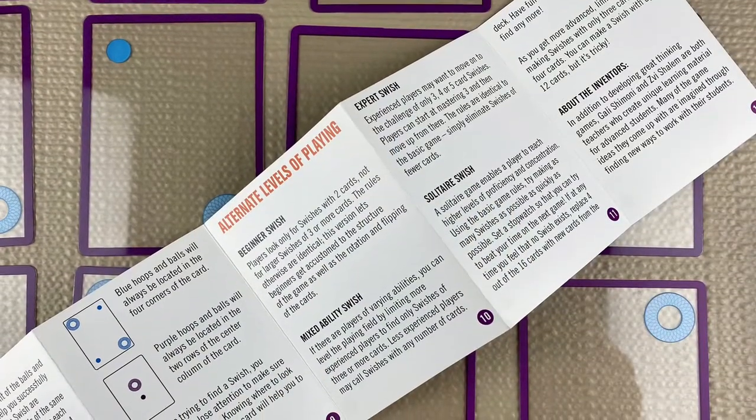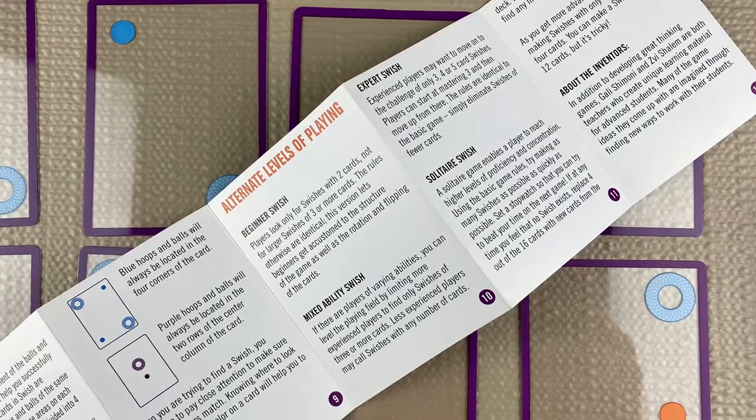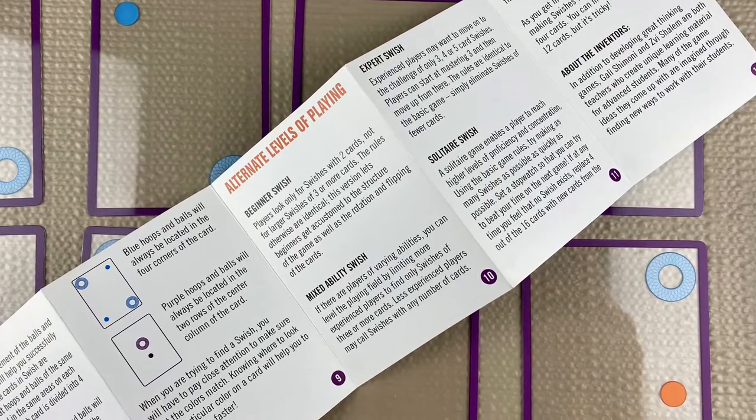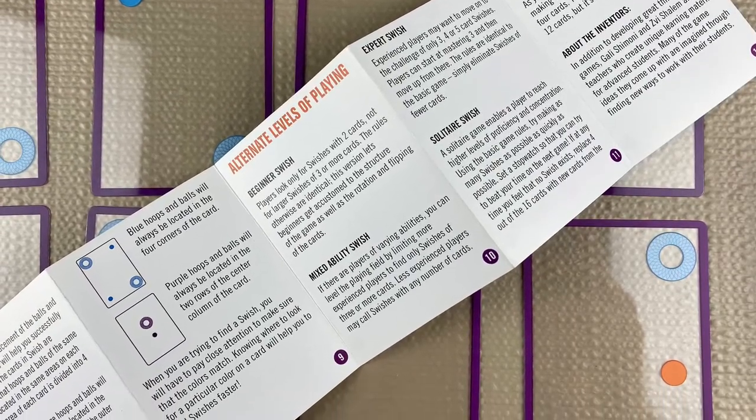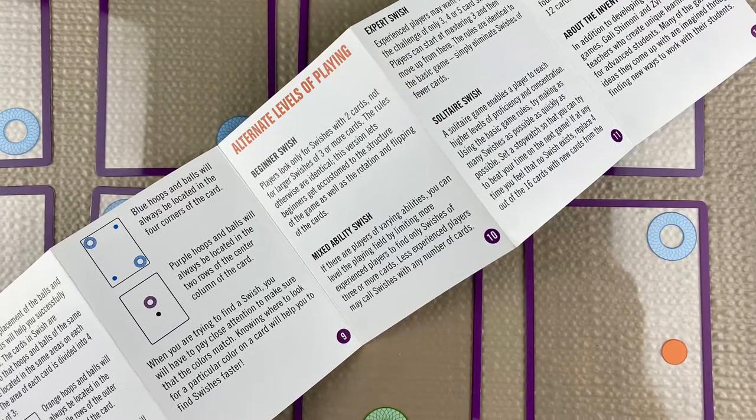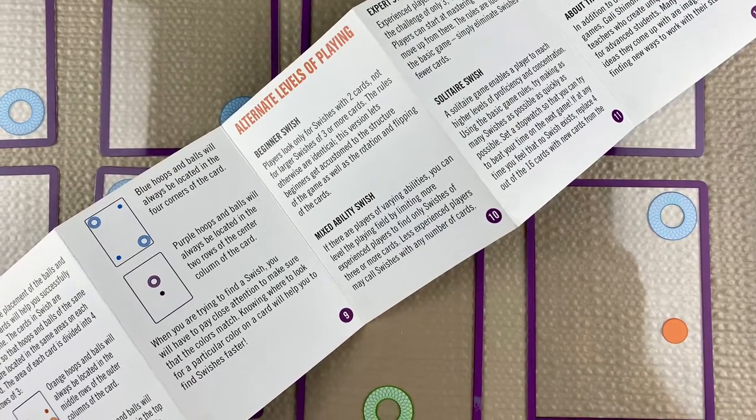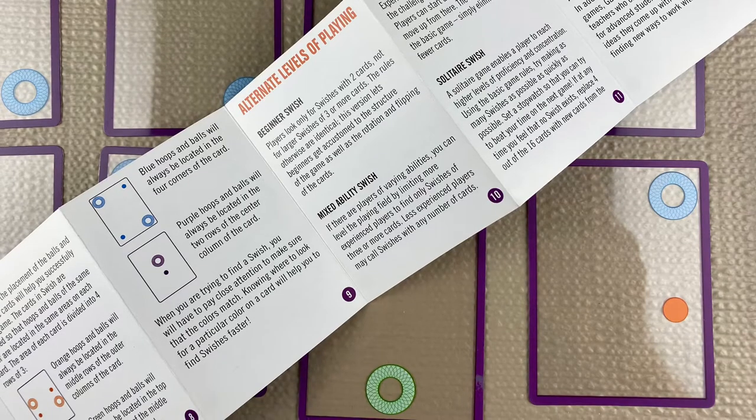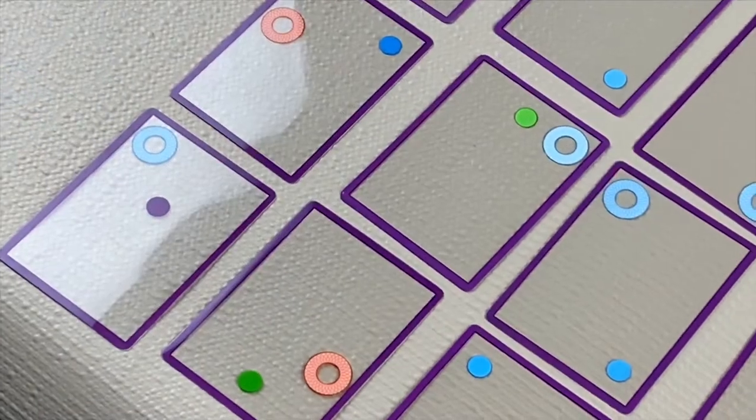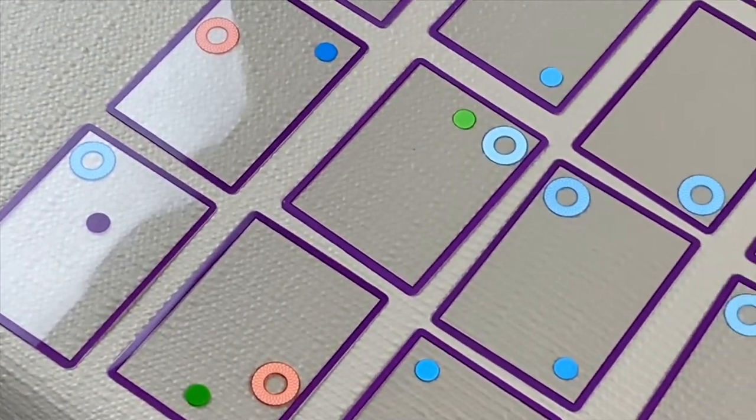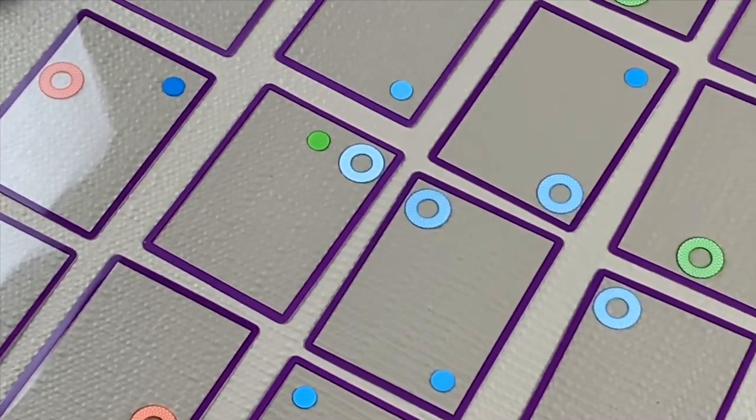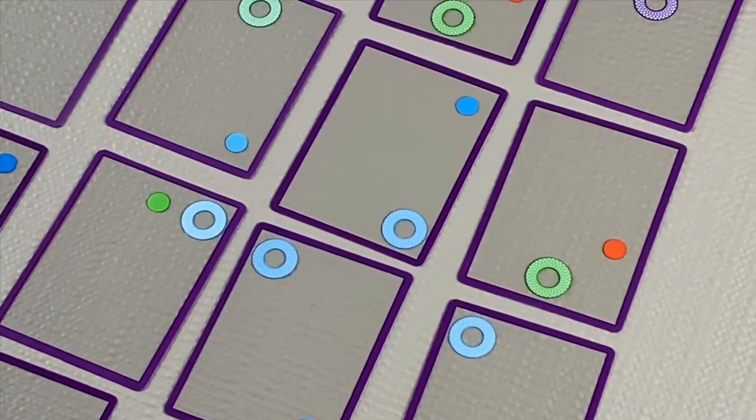I like how the instructions offer different ways to play based on ability level. For players who are younger or just beginning with the game, it recommends sticking to swishes that are only two cards, and then an intermediate level would be swishes that are three or four, and then an expert level where only swishes of five cards are allowed. I think that's a really intelligent way to approach the game.